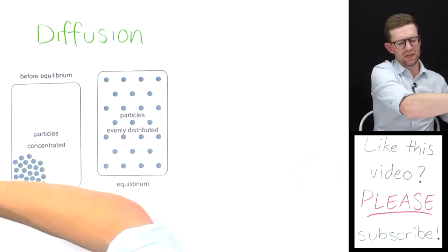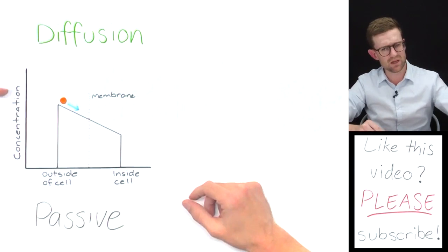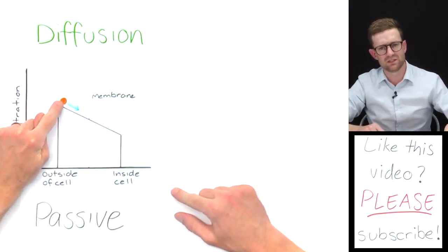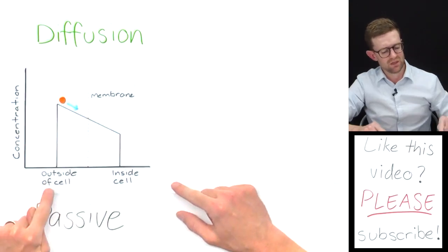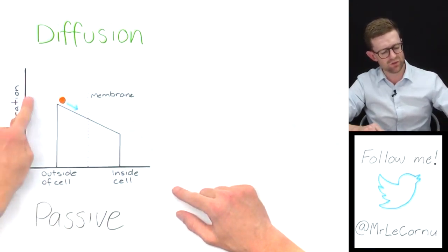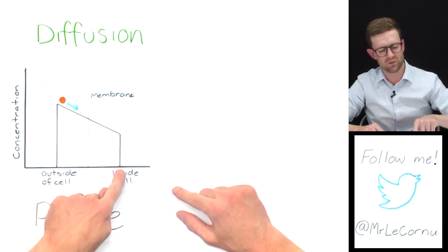You can look at it another way using this graph. If we're talking about concentration of a substance, in this case whatever this molecule is here, outside of the cell there's a higher concentration than inside the cell where there's a lower concentration. This is a representation of the cell membrane.